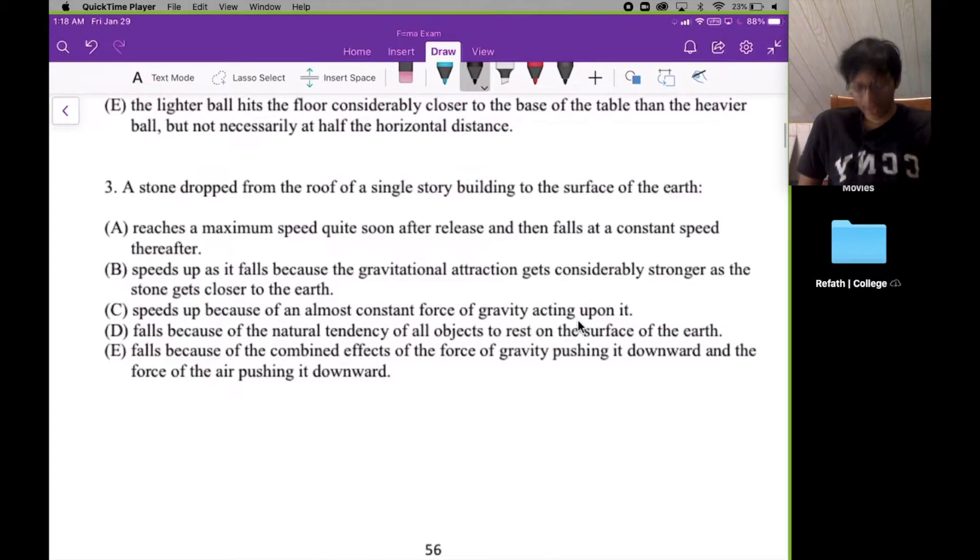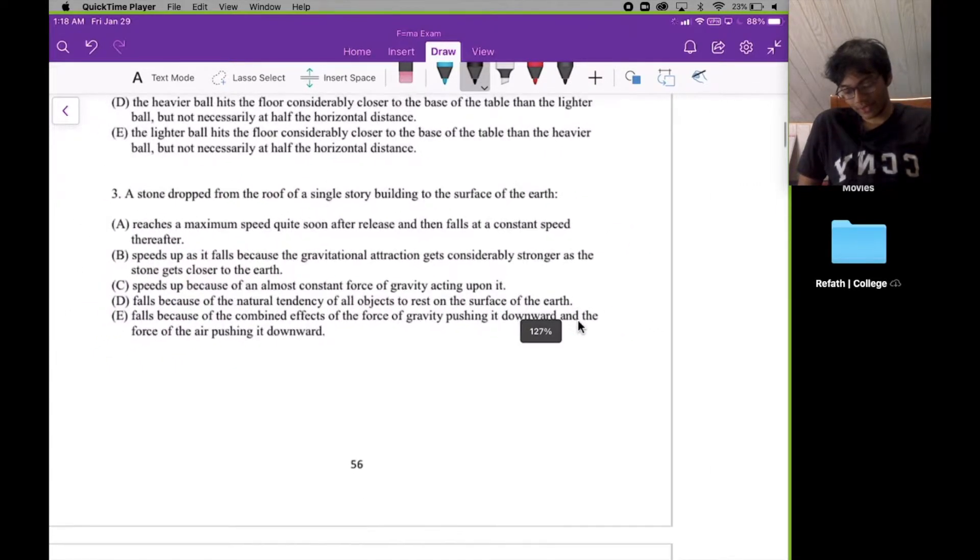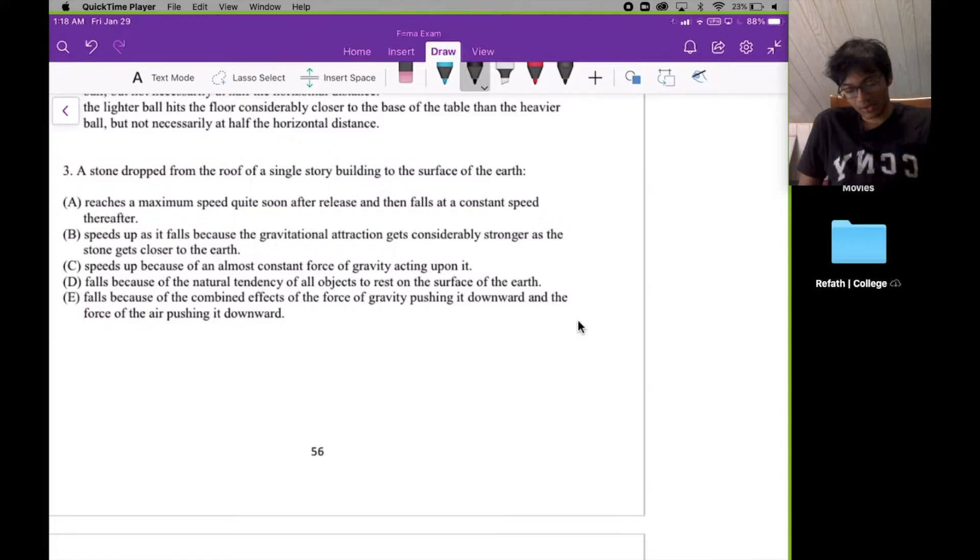Okay, what are the choices? Number one: it reaches a maximum speed quite soon after release and then falls at a constant speed thereafter. Really we're talking about the VT graph, the velocity time graph. Let me draw that graph for you. So we have a velocity time graph right here. Choice A is telling us the stone is dropped so it starts from rest, starts from the origin, reaches a maximum speed soon after release, and after that the speed is constant. That's choice A.